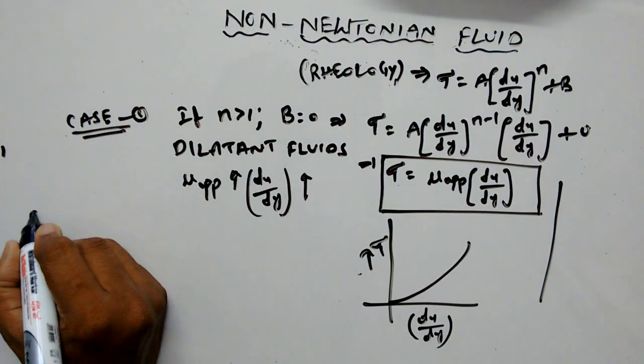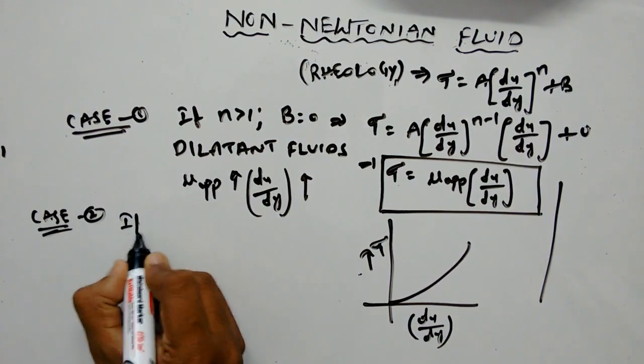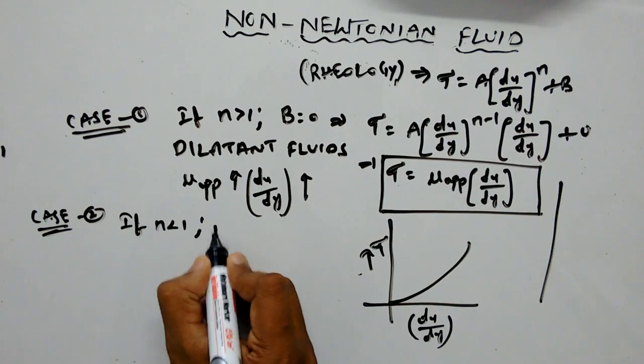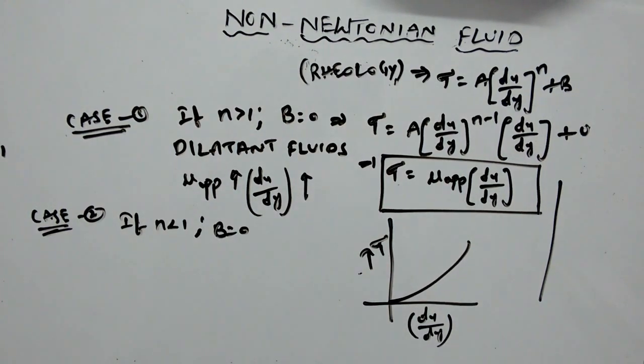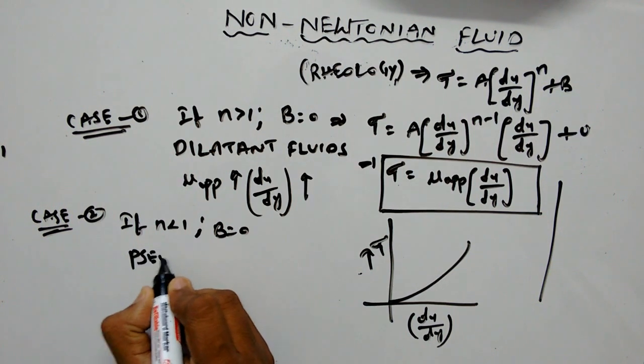Case number 2 is if n is less than 1 and b equals 0. Such type of fluids are known as pseudo plastic fluids.